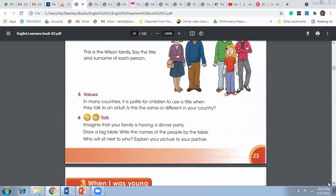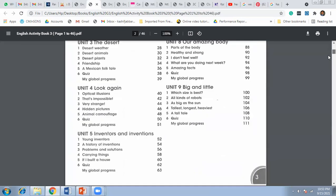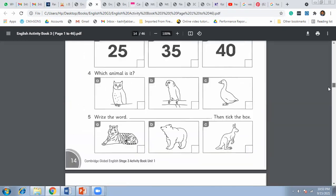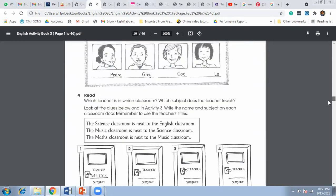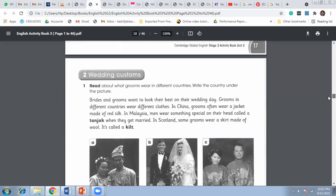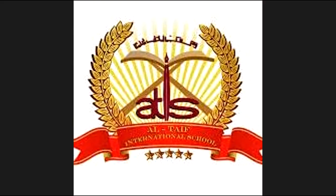Imagine that your family is having a dinner party. You need to draw a big table and write the names of the people by the table. Who will sit next to whom? Explain your picture to your partner. That's a very good activity you have to perform. The homework you are going to do today is page number 18 and 19. This is your homework you are going to complete. That is it for today. I'll see you tomorrow.